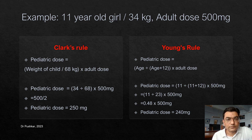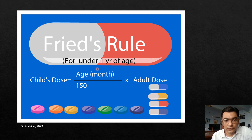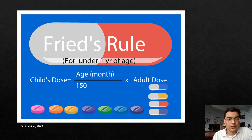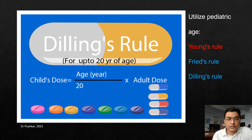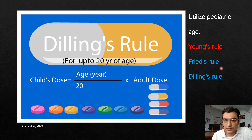There are other formulas as well. Fried's Rule is used when the child is under one year of age, where age is in months: Child's dose equals age in months divided by 150, multiplied by adult dose. Dilling's Rule can be used up to 20 years of age: Child's dose equals age in years divided by 20, multiplied by adult dose. Young's Rule is the most commonly used, while Fried's Rule is used for infants.